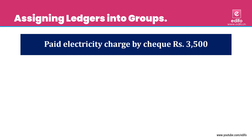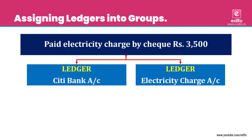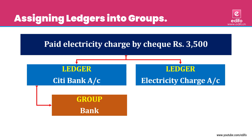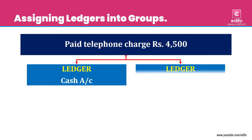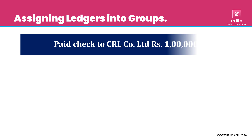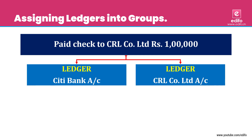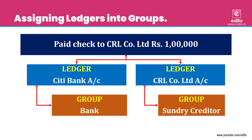Next: paid electricity charges by cheque. Instead of cash, we pay by cheque, so bank balance reduces. Two aspects: electricity charges account and Citibank account. Citibank is under 'Bank' group and electricity charges is 'Indirect Expense'. Next: paid telephone charges — cash and telephone charges. Cash belongs to 'Cash in Hand' and telephone charges is 'Indirect Expense'. Next: paid cheque to CRL Company Limited for Rs. 1 lakh. Bank balance reduces and CRL sundry creditor is reduced. Two aspects: Citibank account under 'Bank' group and CRL Company Limited under 'Sundry Creditor'.